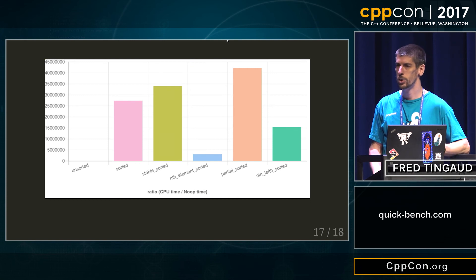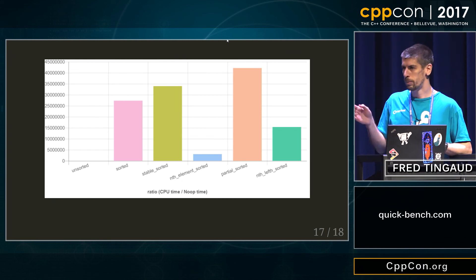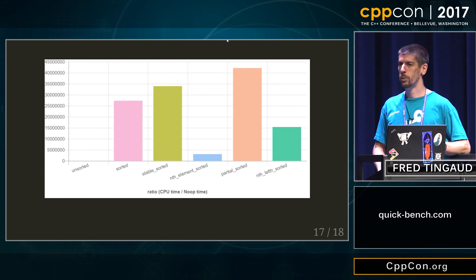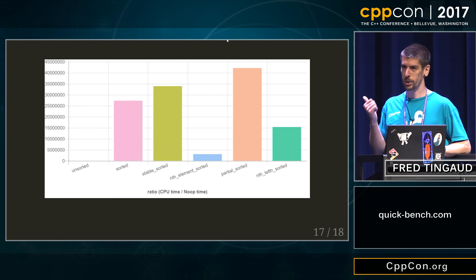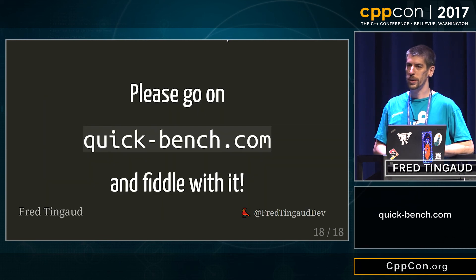That doesn't mean partial_sort is useless — it means you should use it only when you're looking for, say, the three best results of your vector or something like that, where you divide the size by something significant. Otherwise, probably use the nth_element plus sort approach instead. I encourage you to test with quickbench yourself, and you can also follow me on Twitter at fratagodev.